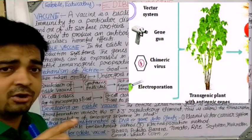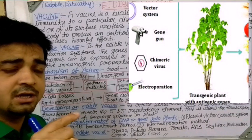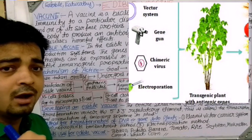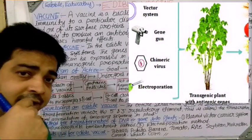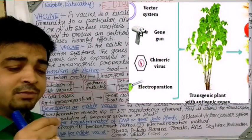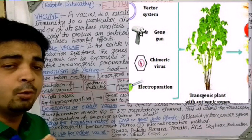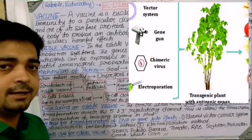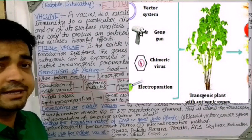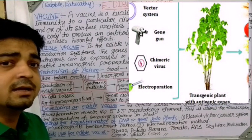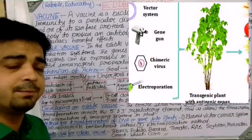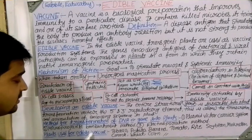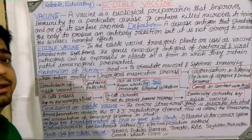Once the genetic material is inserted, the proper antigen develops inside the plant. By eating the plant via the oral route, the antigen initiates production of antibodies by the body. This antigen-antibody reaction provides the immune response for the particular disease.